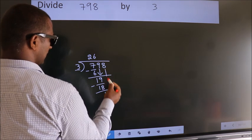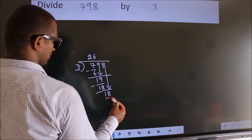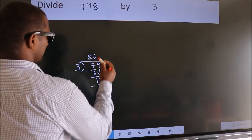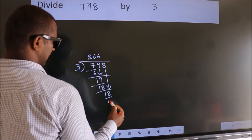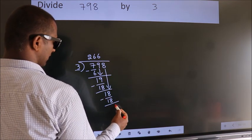After this, bring down the beside number. So 8 down, making 18. When do we get 18 in the 3 table? 3 times 6 equals 18. Now we subtract. We get 0.